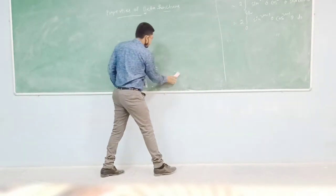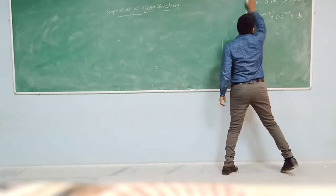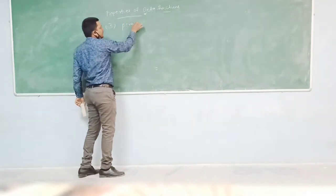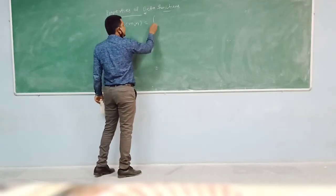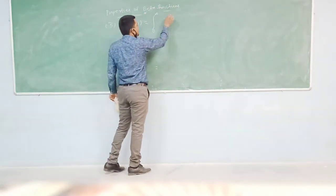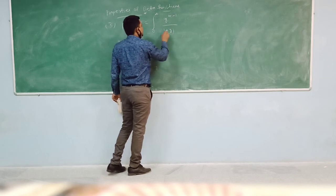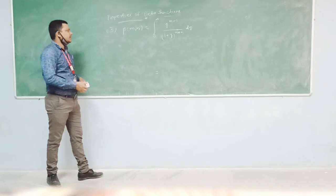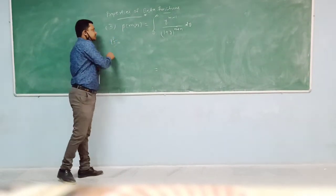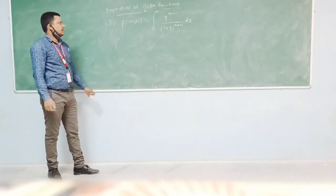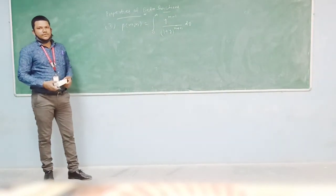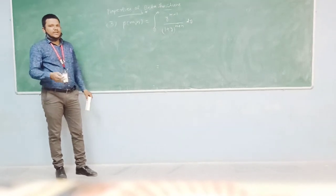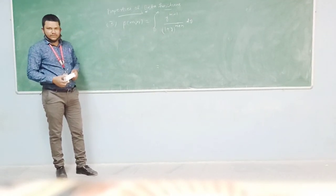The third property of beta function is: beta of m comma n equals integration of 0 to infinity of y power m minus 1 divided by 1 plus y whole power m plus n dy. Additionally, the beta function is related to the gamma function, which is the second type of special function. Thank you.